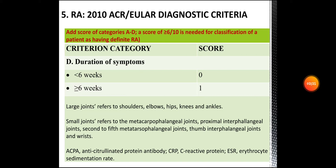When we say large joints, we are referring to shoulders, elbows, hips, knees, and ankles. Small joints refer to the metacarpophalangeal joints, proximal interphalangeal joints, second to fifth metacarpophalangeal joints, and wrists. ACPA is anti-citrullinated protein antibody. CRP is C-reactive protein and ESR is erythrocyte sedimentation rate.